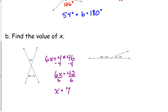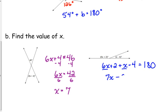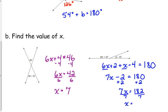For part b, that's a linear pair, so we add the two expressions together: 6x plus 2 plus x minus 4 equals 180 degrees. Combining like terms on the left side: 6x plus x is 7x, and 2 minus 4 is negative 2, giving 7x minus 2 equals 180. Add 2 to both sides: 7x equals 182, then divide by 7, so x equals 26.